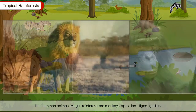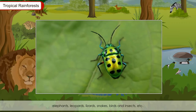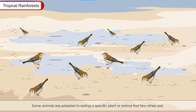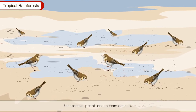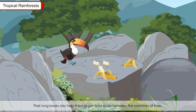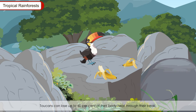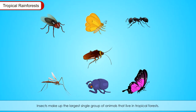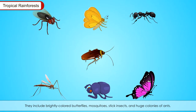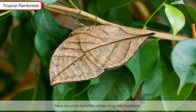The common animals living in rainforests are monkeys, apes, lions, tigers, gorillas, elephants, leopards, lizards, snakes, birds and insects. Some animals are adapted to eating a specific plant or animal that few others eat. For example, parrots and toucans eat nuts and have developed big strong beaks to crack open tough shells. Their long beaks also help them get food easily between branches of trees. Toucans can lose up to 60% of their body heat through their beak. Insects make up the largest single group of animals living in tropical forests, including brightly coloured butterflies, mosquitoes, stick insects and huge colonies of ants. Stick insects use camouflage to blend in with the branches of trees.